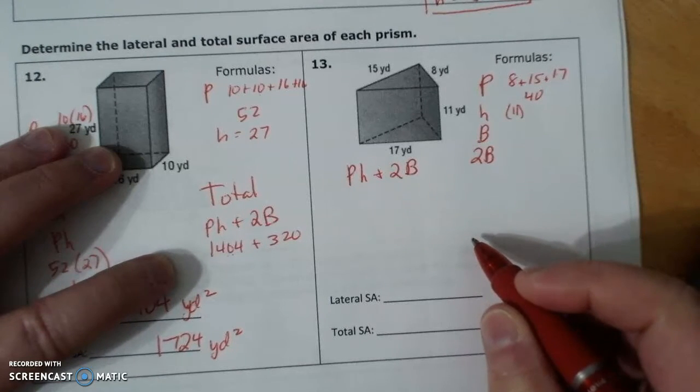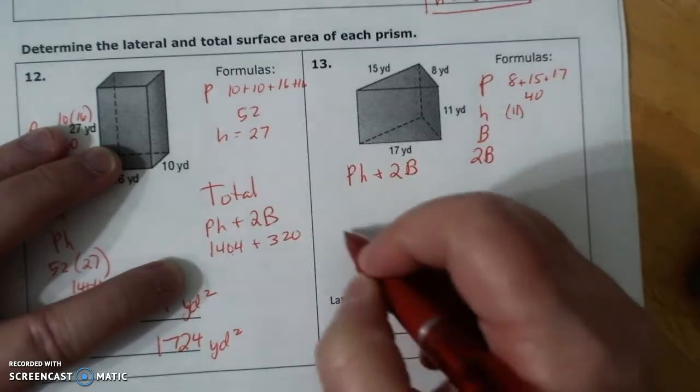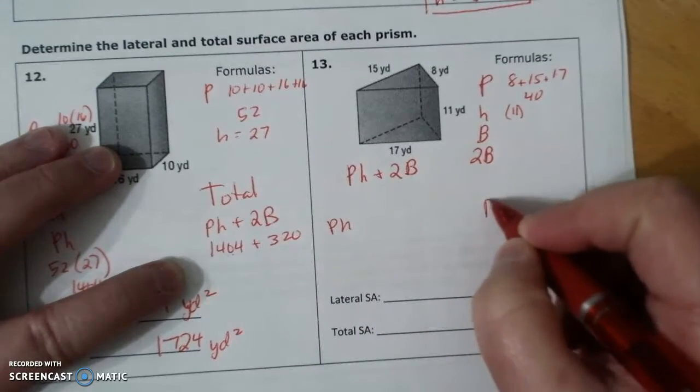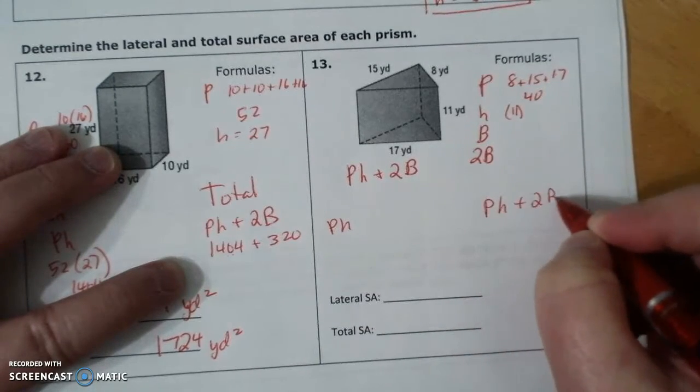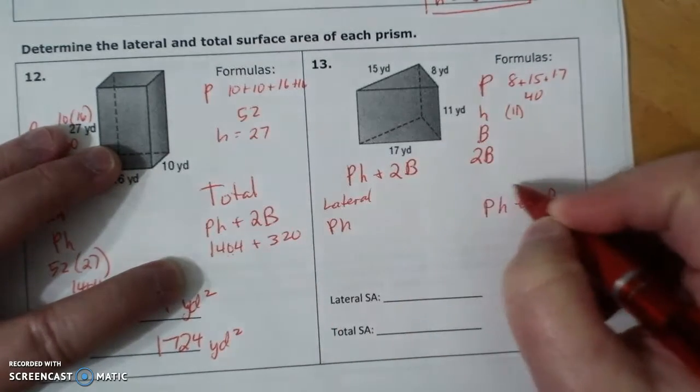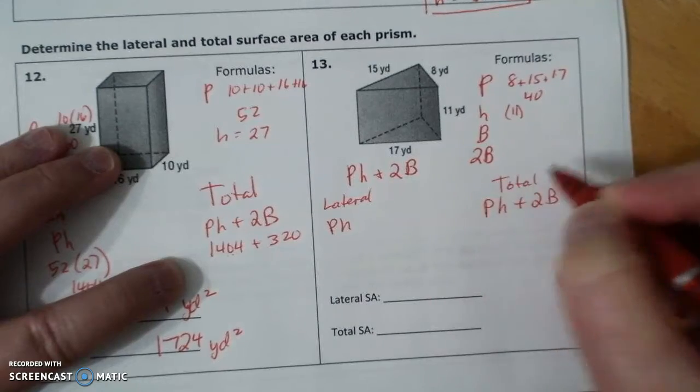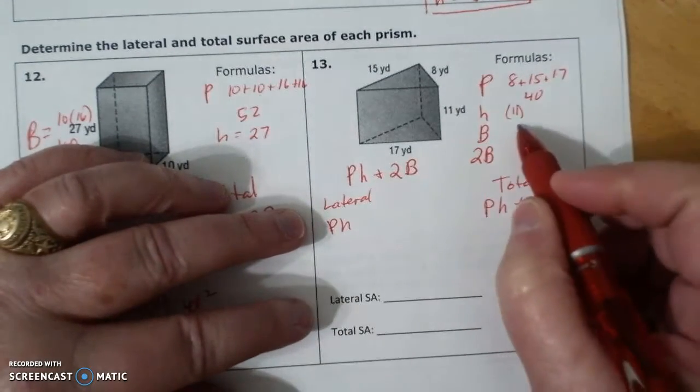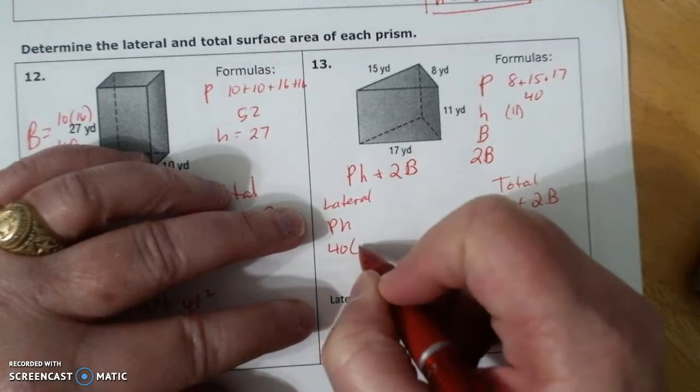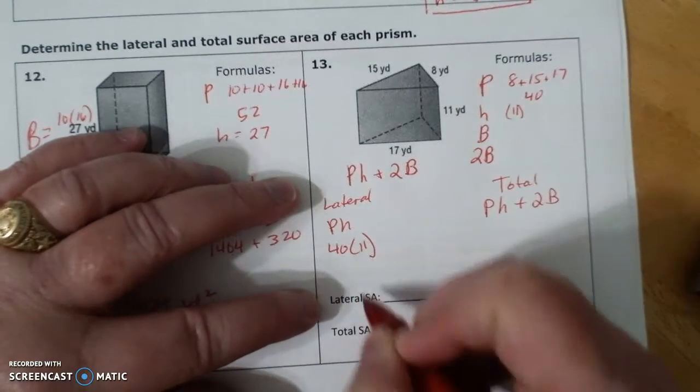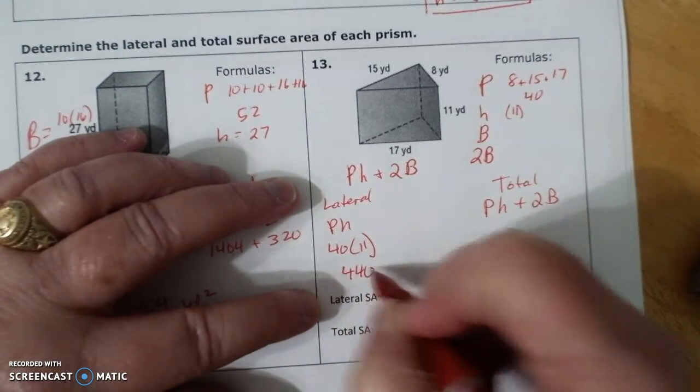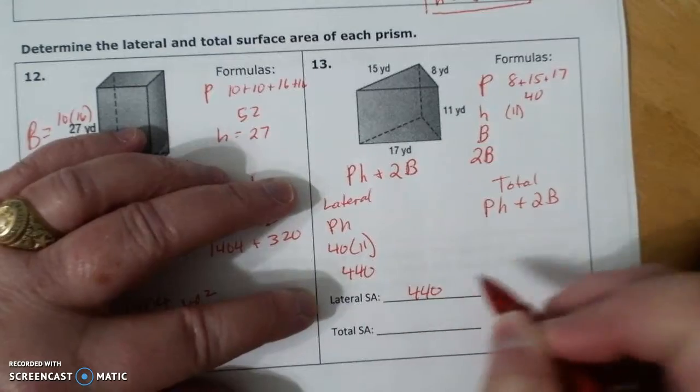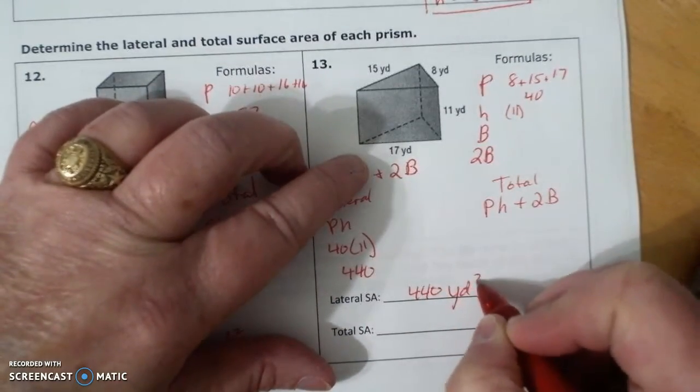Ph and ph plus 2b. This is my lateral, and this is my total. I have 40 times 11, which is 440 yards squared.